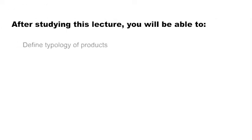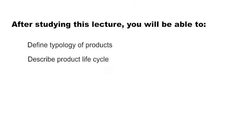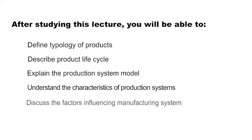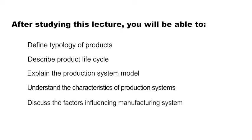Hello students, welcome to the lecture on production system. After this lecture, we will be able to learn the following objectives: define typology of products, describe product lifecycle, explain the production system model, understand the characteristics of production systems, discuss the factors influencing manufacturing system, and define the production system design.